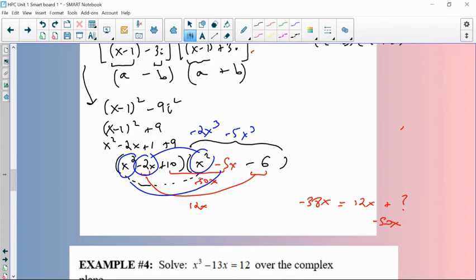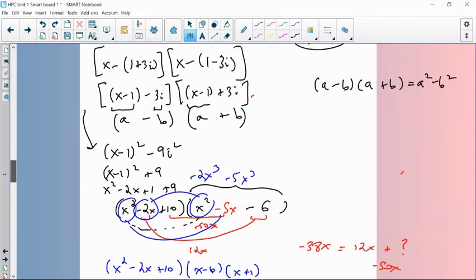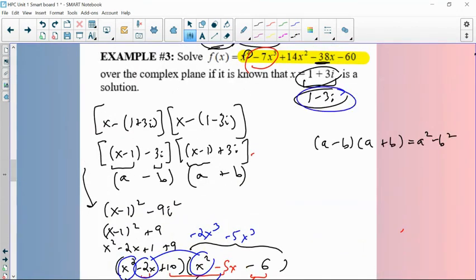That factors further. So here's my x squared minus 2x plus 10. That gave me my two complex solutions. And then x minus 6 and x plus 1, those two factors would have given me negative 5x minus 6, which means my two real zeros were x equals 6 and x equals negative 1. So there's one solution, two solutions, and then 1 minus 3i would be the third missing solution.